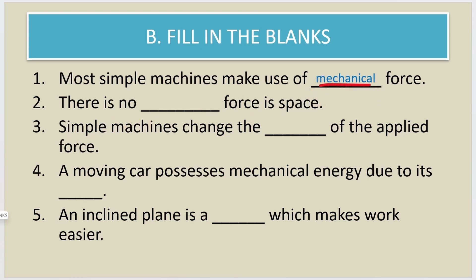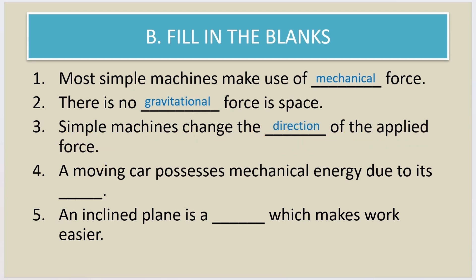Second fill in the blank: there is no dash force in space — the answer is gravitational force; gravitational force is not there in space. Third fill in the blank: simple machines change the dash of the applied force — the correct answer is direction. Simple machines change the direction of the applied force.